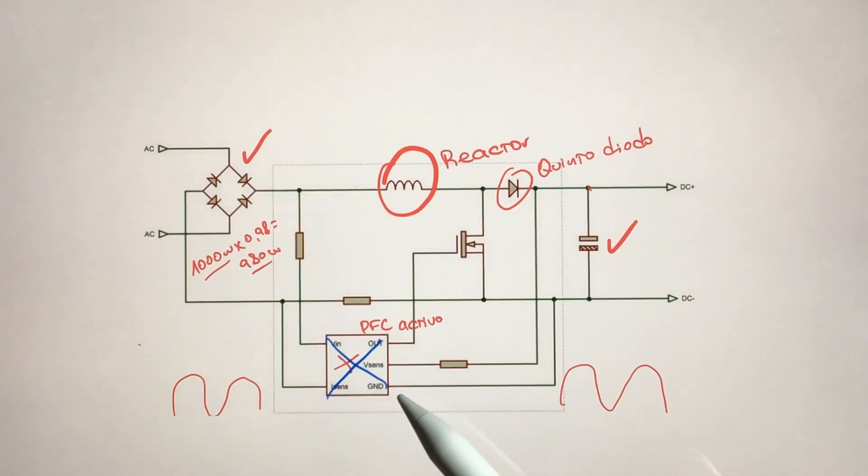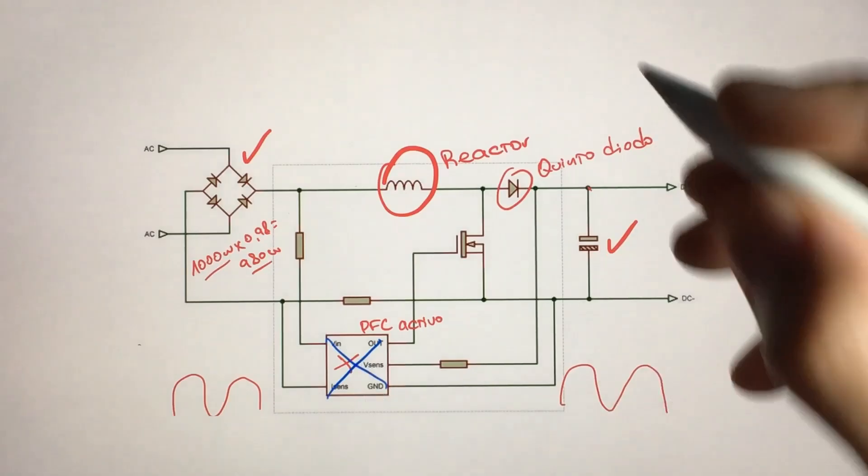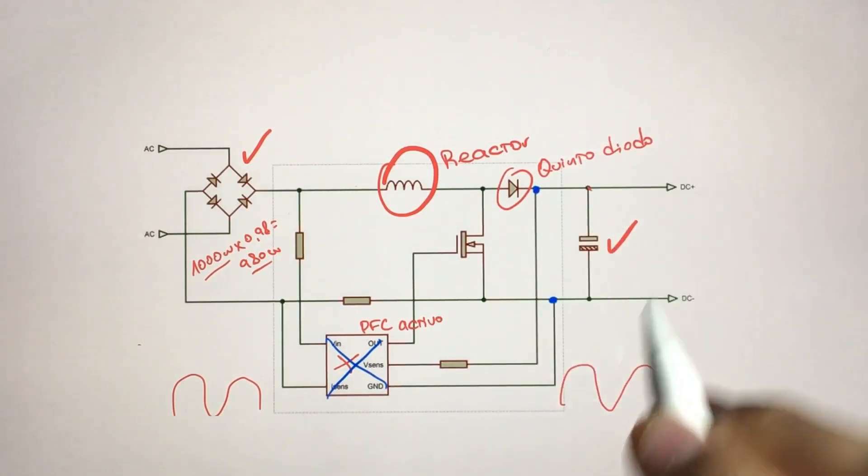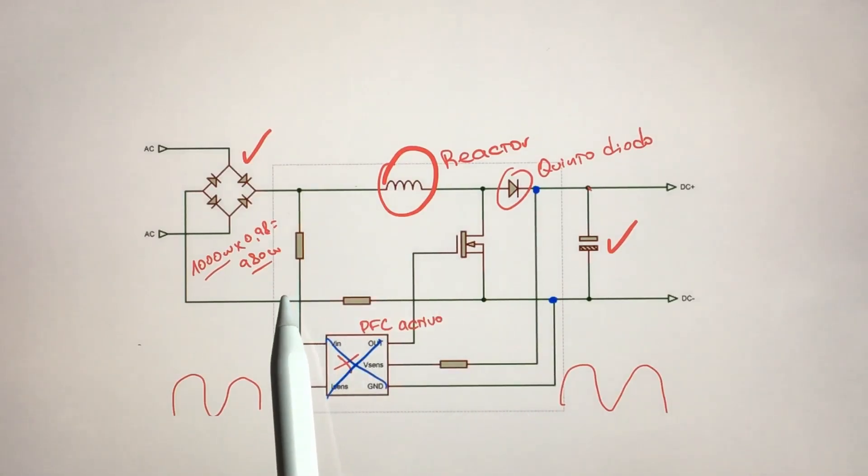Notice that this active PFC, that this component is inside the microprocessor, has a sample of this and a sample of this. And in turn it has a sample of this, and a sample of this. Obviously it has resistances because it is high voltage, so it has large resistances to be able to detect a lower value but still see the wave.